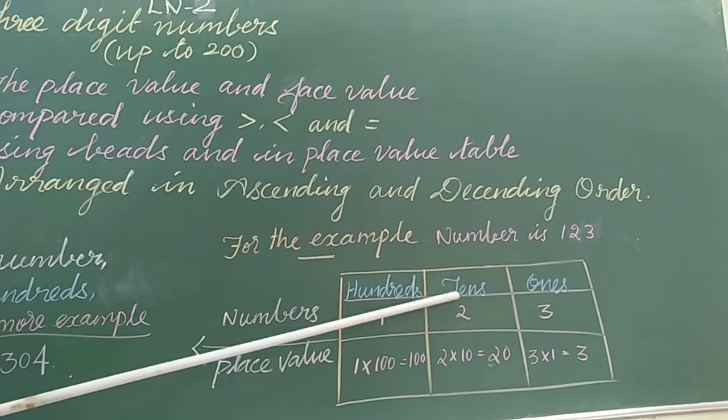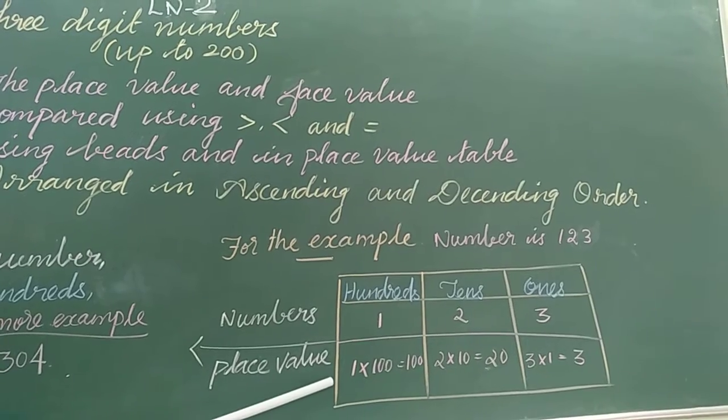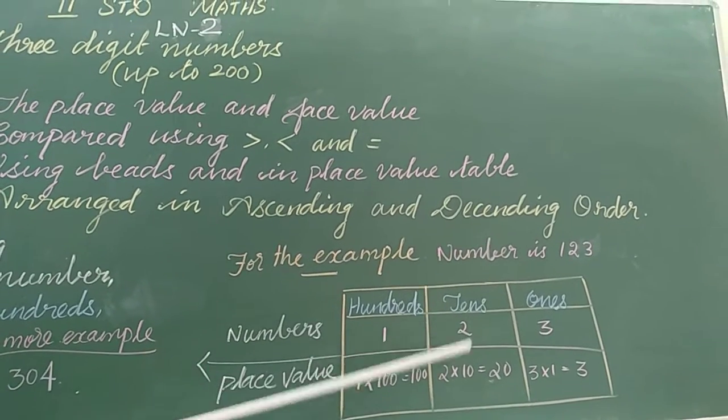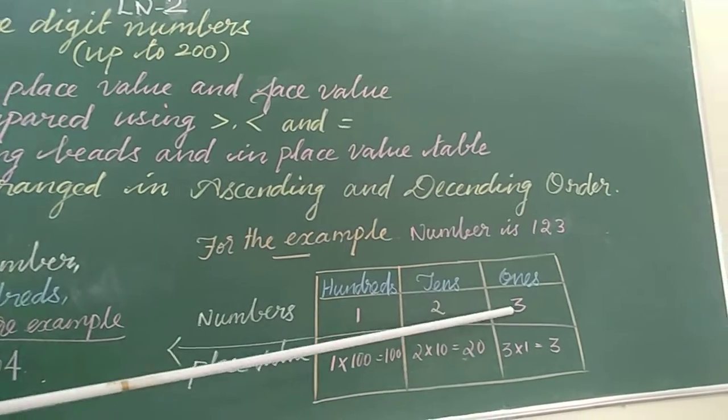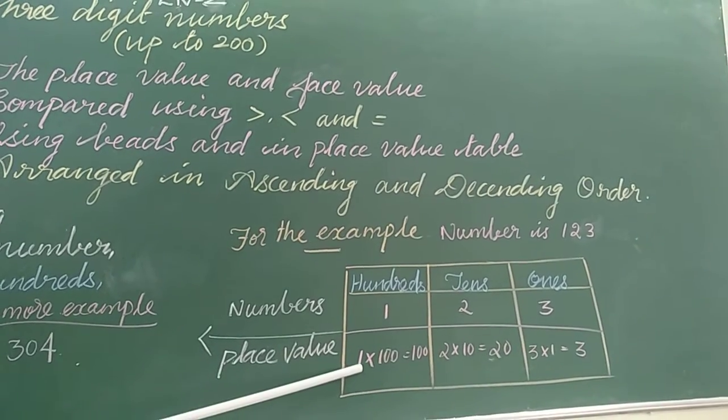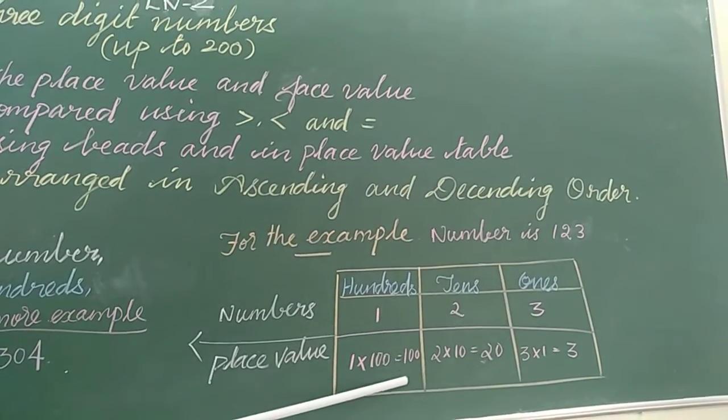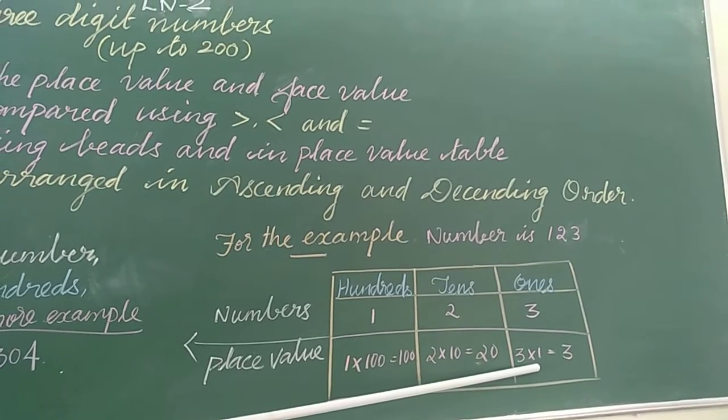I have given a number for example, 123. You allocate the numbers column. 1 is the 100th place, 2 is the 10s place, 3 is the 1s place. Here is the place value: 1 into 100 is 100, 2 into 10 is 20, and 3 in 1s is 3.